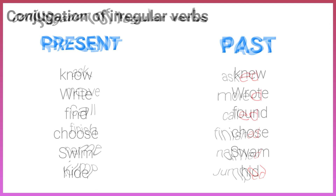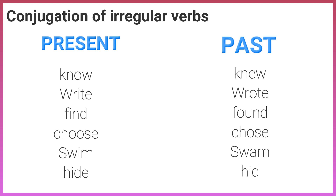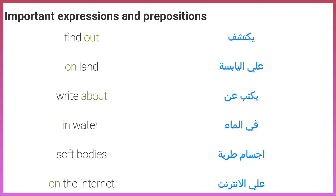Irregular verbs: know/knew, write/wrote, find/found, choose/chose, swim/swam, hide/hid. Important expressions and prepositions: find out, on land, right about, in water, soft bodies, on the internet.